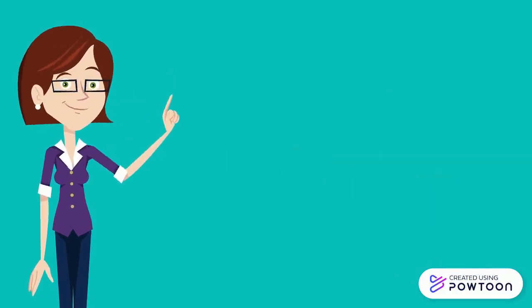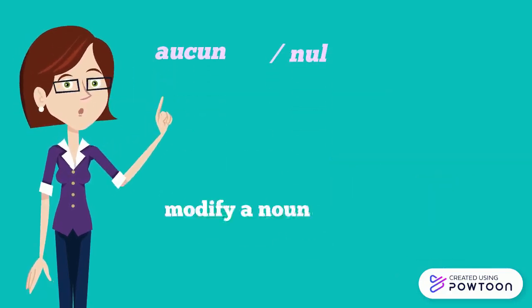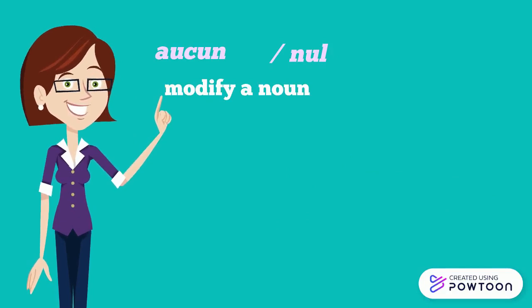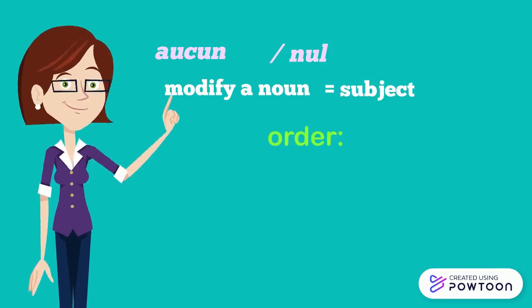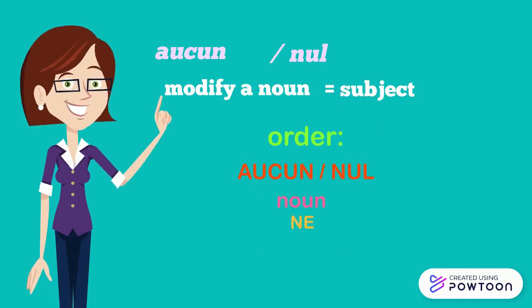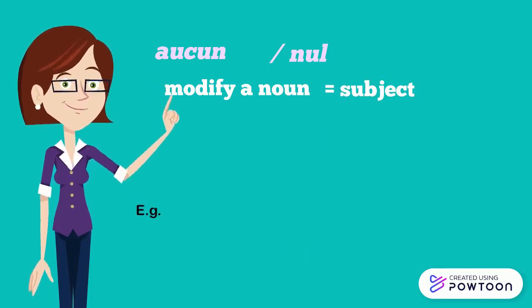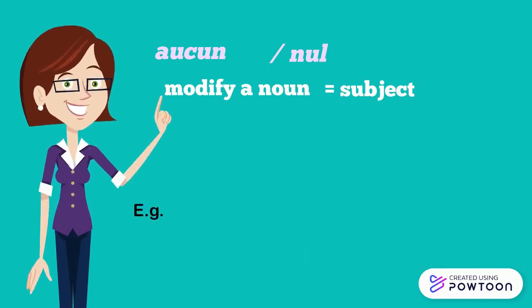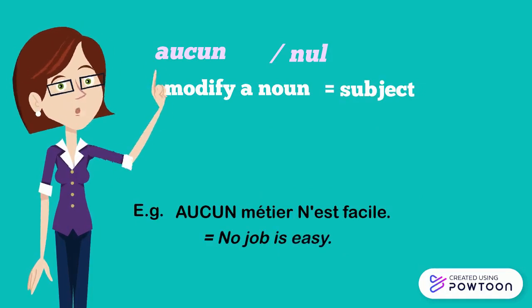Moreover, the adjectives aucun and nul can modify a noun that is the subject. The order is: aucun / nul + noun + ne + verb. For instance, aucun métier n'est facile — no job is easy.